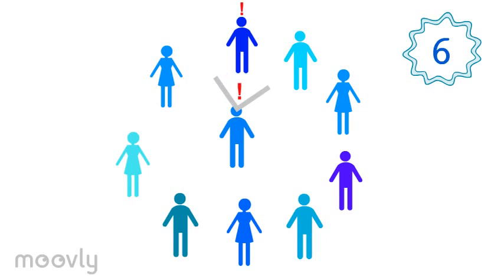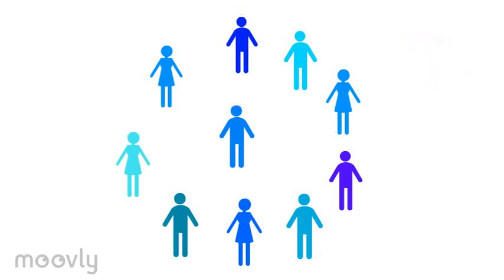When the person in the center has spotted the eye contact, his round is over. In this case he has 6 points. He joins the circle and selects a new person to stand in the center.